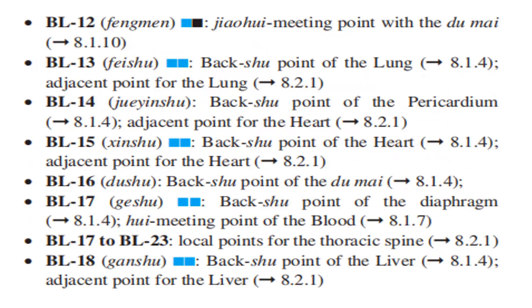Bladder 12 is the Jiao Wei Meeting Point with the Du Mai. Bladder 13 is the Back-Shu Point of the Lung and the adjacent point for the lungs. Bladder 14 is the Back-Shu Point of the Pericardium and the adjacent point for the heart. Bladder 15 is the Back-Shu Point of the Heart and the adjacent point for the heart.